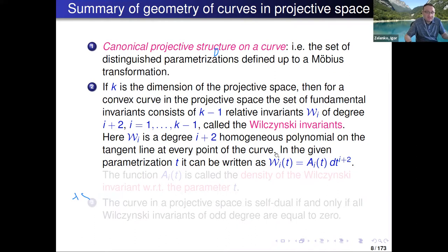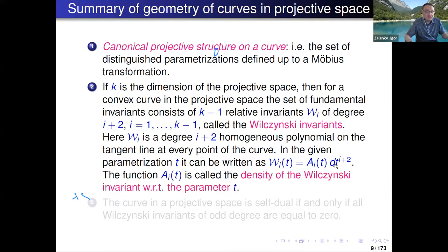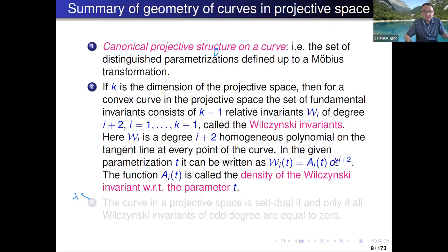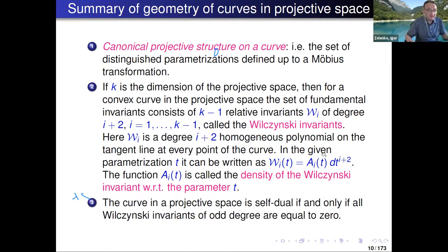Each W_i is a degree-(i+2) homogeneous polynomial on the tangent line at every point of the curve. Namely, in a given parameterization, W_i can be written as a_i(t) times dt to the power i+2. I call a_i(t) the density of the i-th Wilczynski invariant. This density is a relative invariant in differential geometry: if you reparameterize the curve, this density is multiplied by the derivative of the reparameterization to the power i+2.